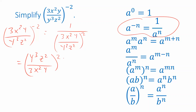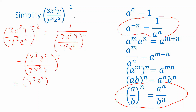Next, I have a fraction being raised to a power. We can see a property that tells us how to deal with that — we just apply that exponent to each of the numerator and denominator. So this is the same as y cubed z squared quantity squared, over 3x squared y quantity squared.